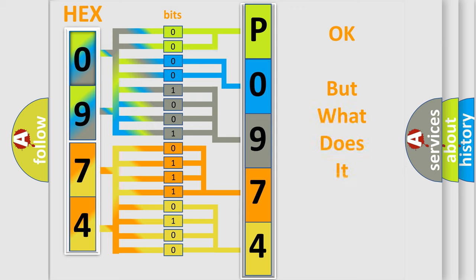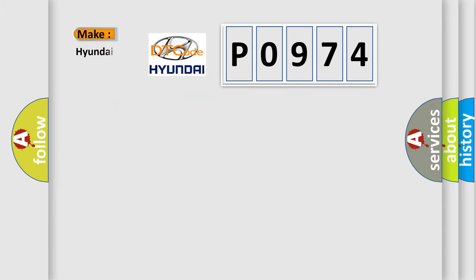The number itself does not make sense to us if we cannot assign information about what it actually expresses. So, what does the Diagnostic Trouble Code P0974 interpret specifically for Hyundai car manufacturers?